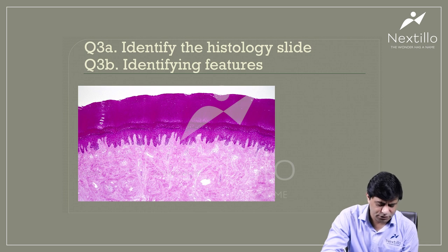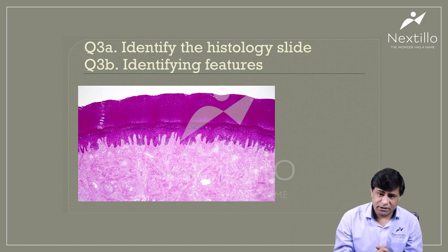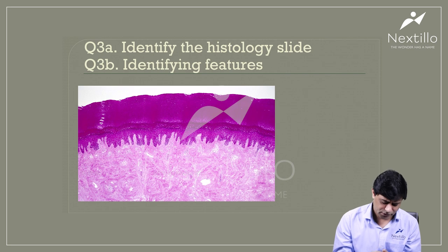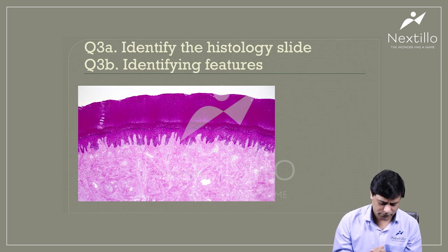Question number three: identify the histology slide and its identifying features. This is a thick epithelium with multiple layers. You cannot see the nuclei in the top layers very clearly because they are deeply eosinophilic. You can see papillary projections at the lower edge of this epithelium, and below there is connective tissue with some blood vessels. There are no skeletal muscles visible.